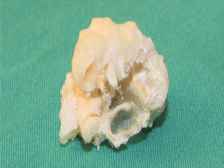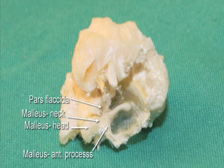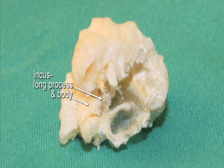Note the position of the pars flaccida and the anterior process of the malleus. The neck and head of the malleus are protruding up into the epitympanic recess. The body and the long process of the incus can be seen ending in an articular process that articulates with the head of the stapes.